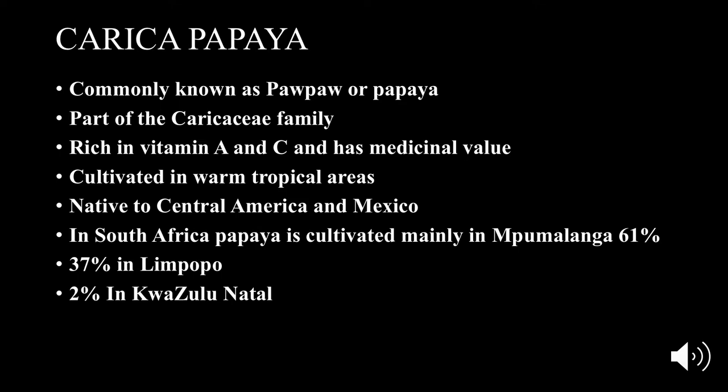The papaya is mostly cultivated in warmer tropical areas and is native to Central America as well as Mexico. In South Africa, papaya is mostly cultivated in Mpumalanga, where 61% is produced, 37% in Limpopo, and 2% in KwaZulu-Natal.